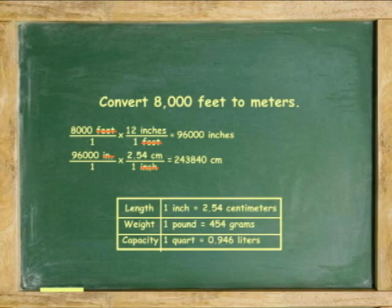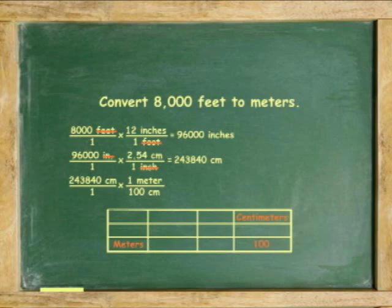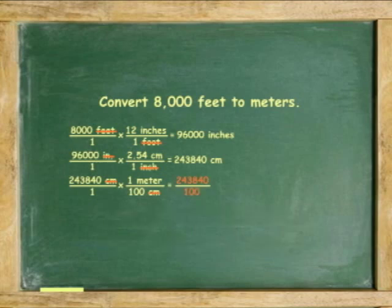Finally, convert centimeters to meters. 243,840 centimeters over 1 times 1 meter per 100 centimeters. Cancel centimeters. Multiply and divide 243,840 by 100. The answer is 2,438.4 meters.